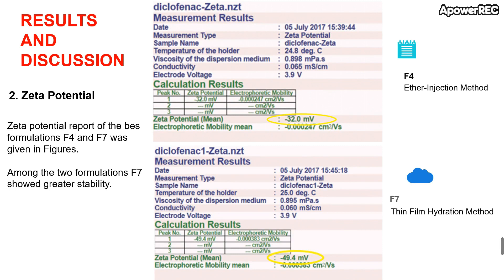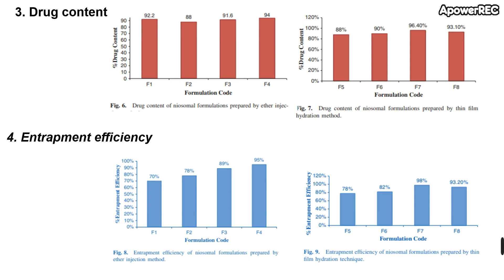All eight formulations were characterized for zeta potential to assess stability. From the results, the best formulations F4 and F7 were found to be -32 mV and -49.4 mV respectively, so F7 showed greater stability. Regarding drug content, F4 showed the highest drug content among formulations prepared by ether injection method, while F7 showed the highest drug content among those prepared by thin film hydration. Comparing F4 and F7, F7 — which contains Span 80 — showed the highest drug content of 96.4%.